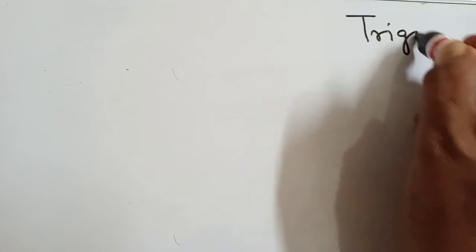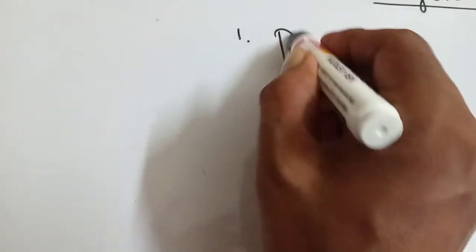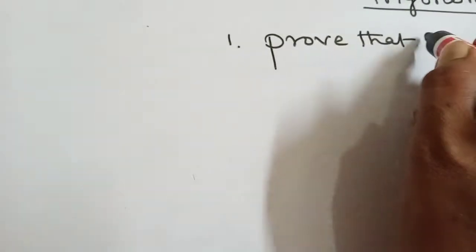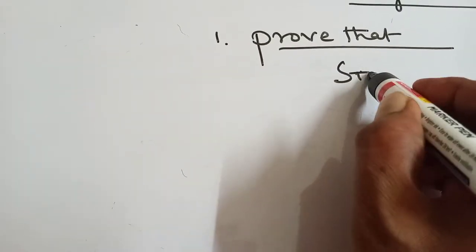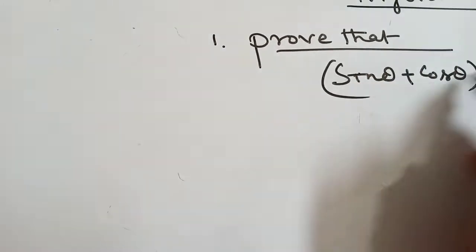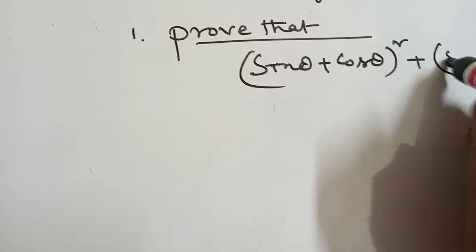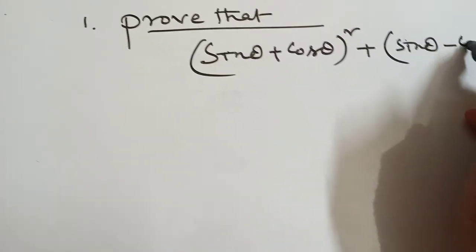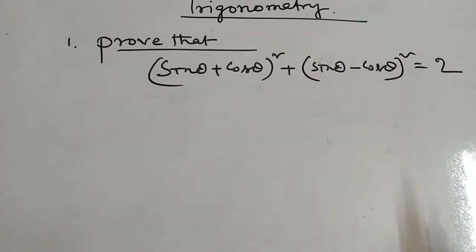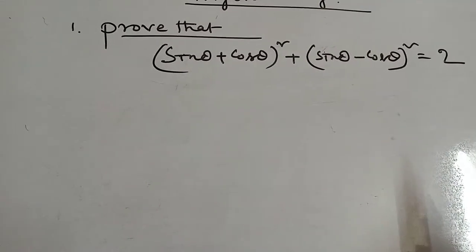Trigonometry. Prove that: sin theta plus cos theta whole square plus sin theta minus cos theta whole square is equal to 2.